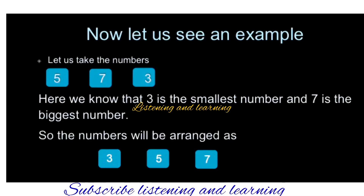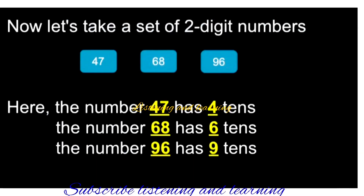Now let us check an example. Let us take the numbers 5, 7, and 3. Which is the smallest number? 3 is the smallest number, and 7 is the biggest number. In ascending order, the smallest number comes first. Here the smallest number is 3, so the number 3 comes first. That is 3, 5, 7. Now let us take a set of 2-digit numbers: 47, 68, 96.